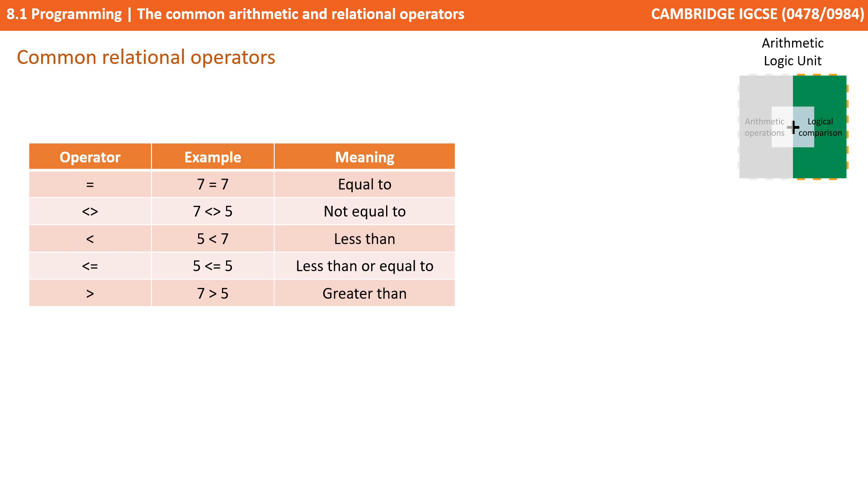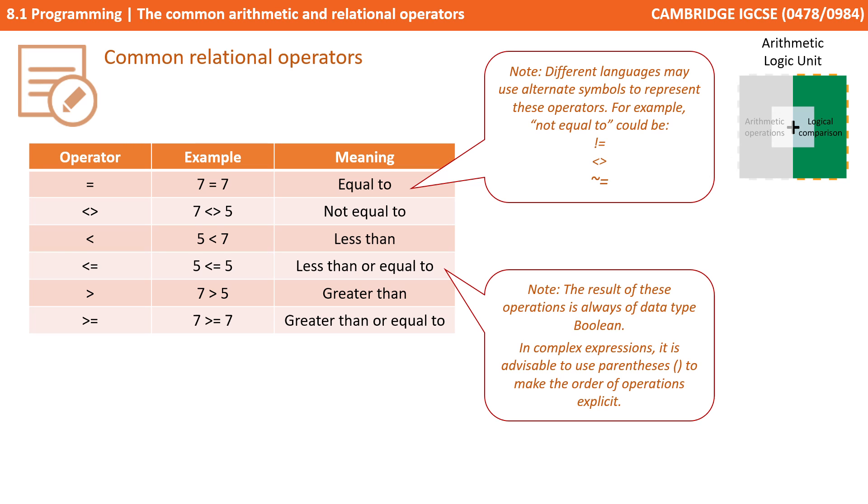Then we've got greater than, as in 7 is greater than 5. And finally, to round off the set, we have greater than or equals to. So in our example, 7 is greater than or equals to 7.